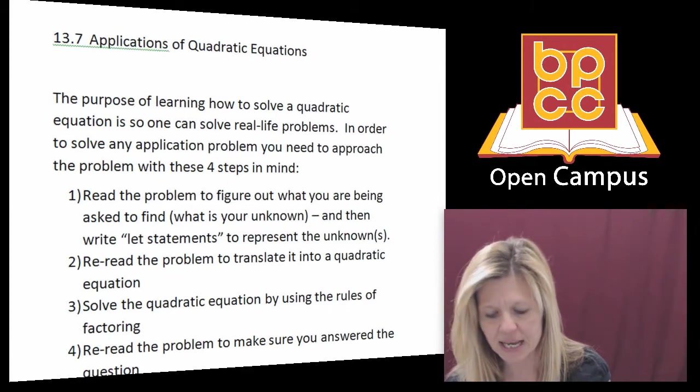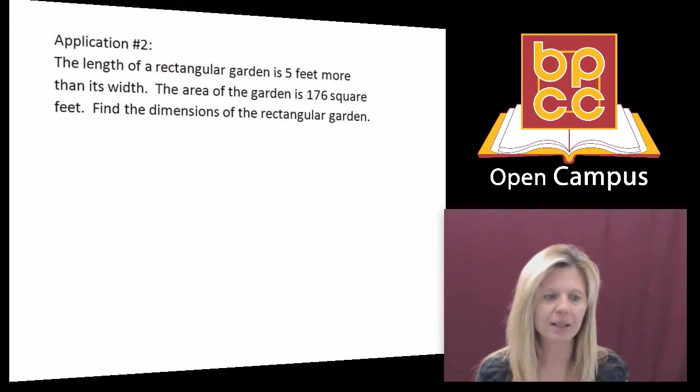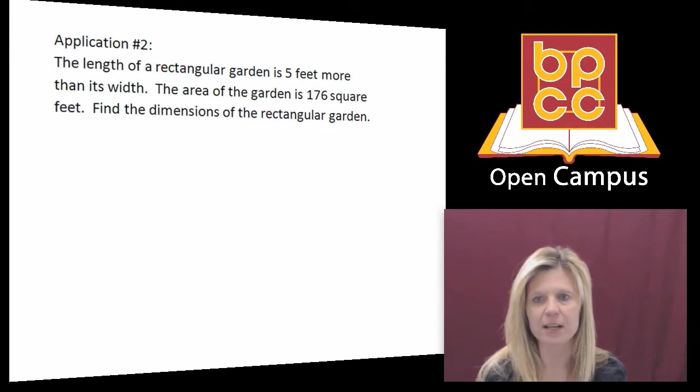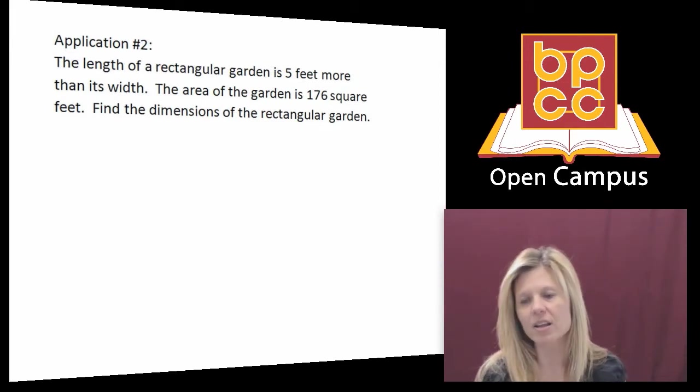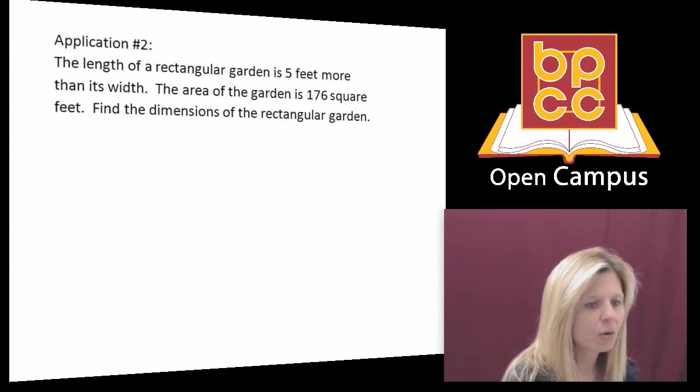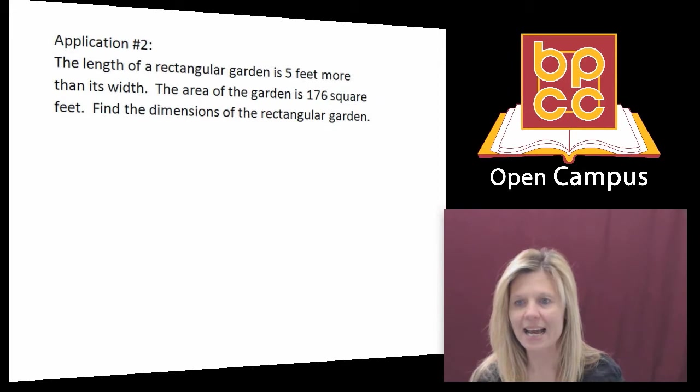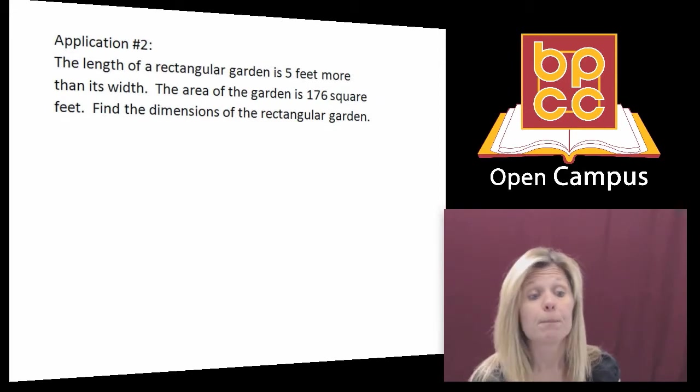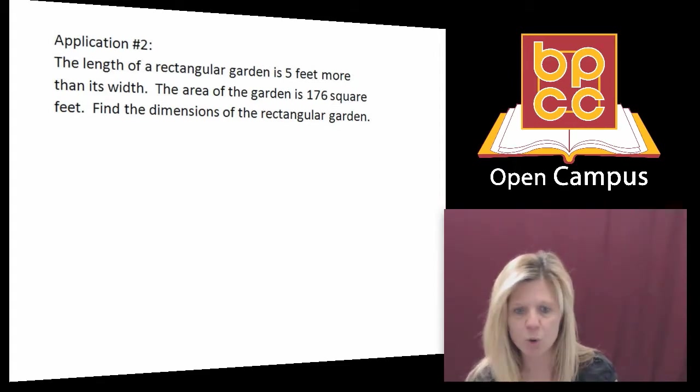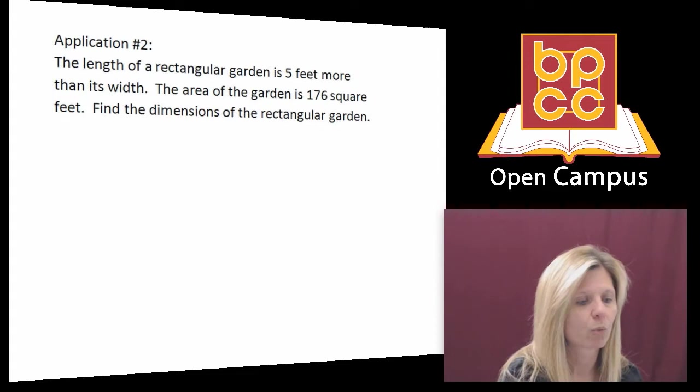So we're going to look at a couple of examples of word problems. Don't be afraid. We're going to do the best we can. So if you look, we're going to go to our notes to application problem two. It says, the length of a rectangular garden is five feet more than its width. The area of the garden is 176 square feet. Find the dimensions of the rectangle. Okay. I want you to note some key words in there. Key words, length, width, rectangle, area, dimensions. You should all be accustomed to have heard those words before. And that's a problem with a word problem. If you've never heard those words before, I understand this may be confusing. So you've got to stick with me. We're going to review some stuff you should know. We're going to go to the whiteboard.